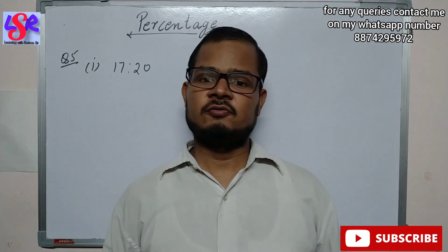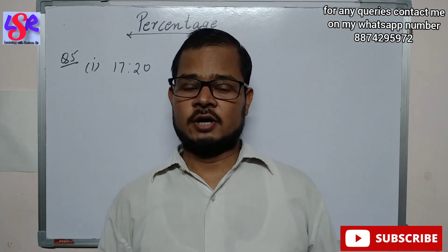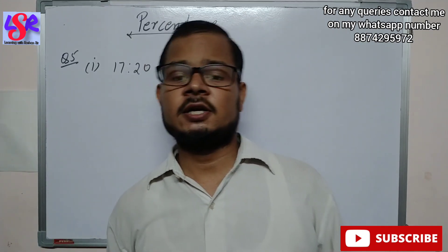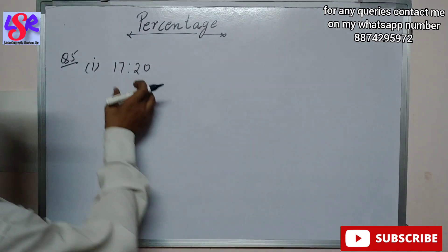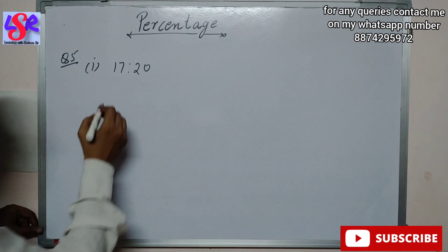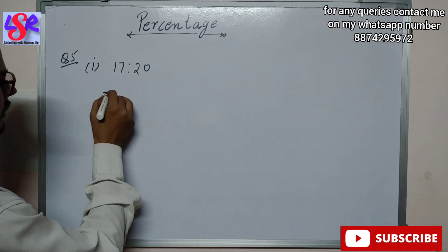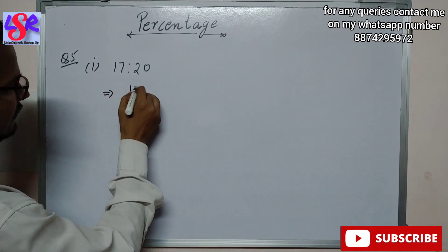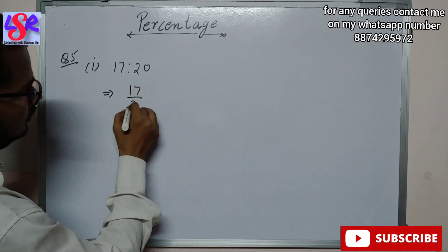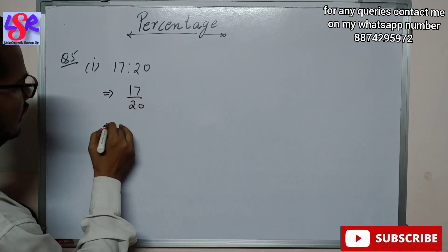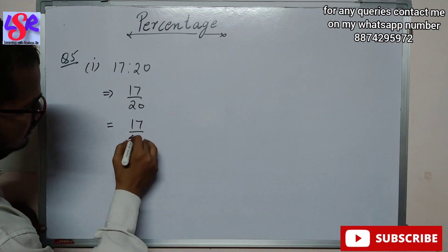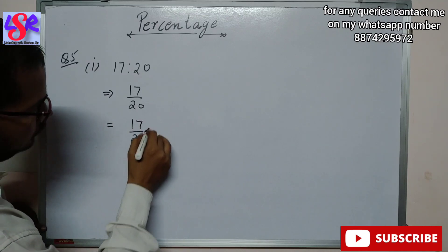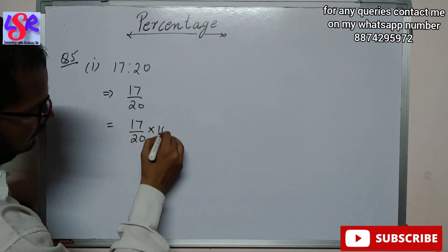Now in Question 5, we have been given a ratio and we have to convert it into a percentage. So 17 is to 20 can be written as 17 upon 20. To convert into percentage, this is written as 17 upon 20 into 100.